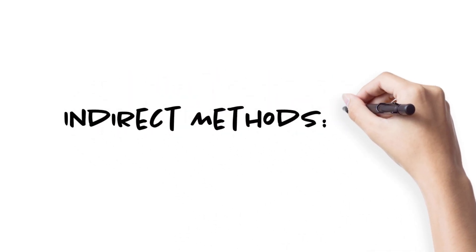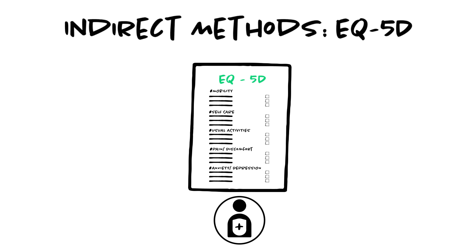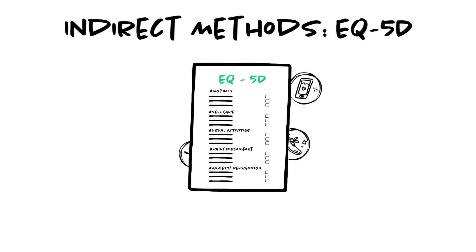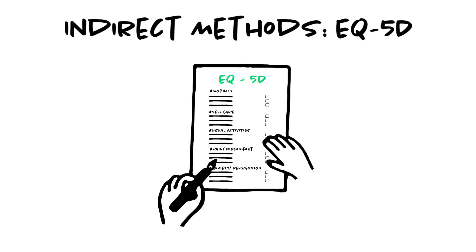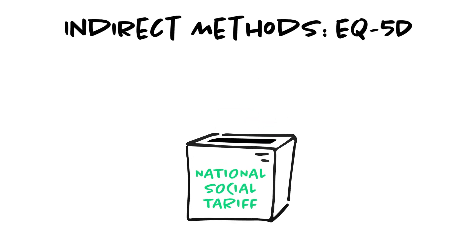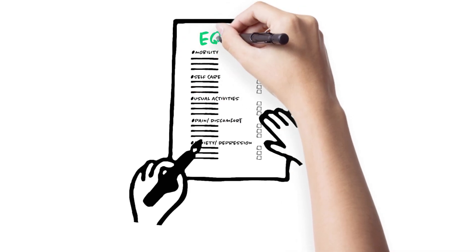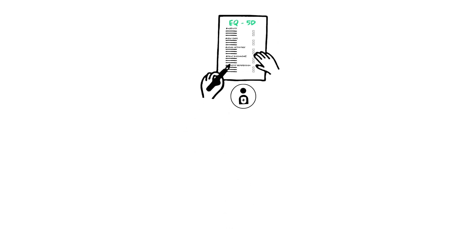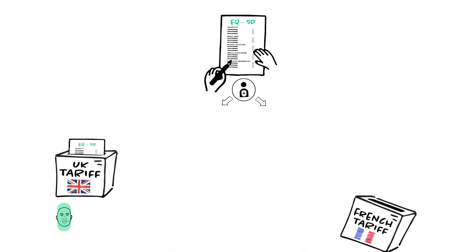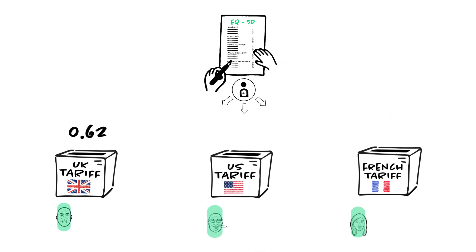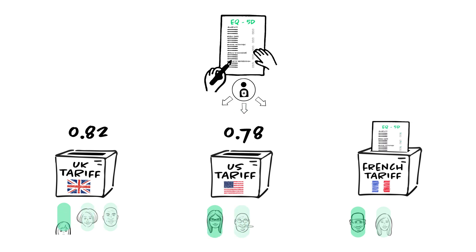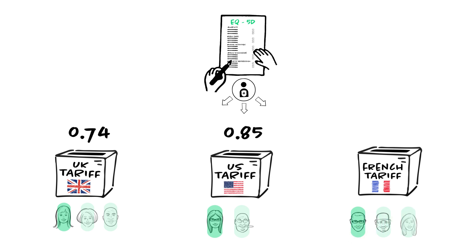We also have indirect methods involving the use of health state classifications based on quality of life questionnaires. The most commonly used questionnaire is called EQ5D. The idea is to take a simple quality of life questionnaire, which assigns a utility value based on an existing social tariff. All combinations of answers to the different questions represent a health state. The instrument is quick and easy to use, extensively researched, and translated into many languages. An algorithm allows translation of health states into utility, and its implementation provides utility values called social tariffs. In most countries, they are derived from a large study in a sample of the general population using techniques such as the time trade-off or the standard gamble.